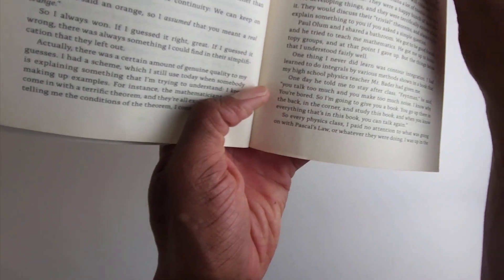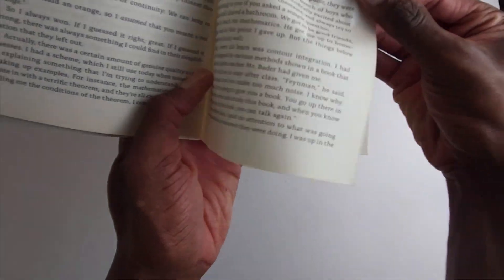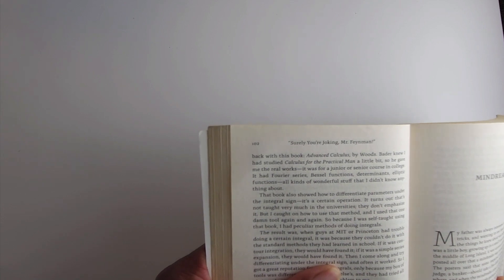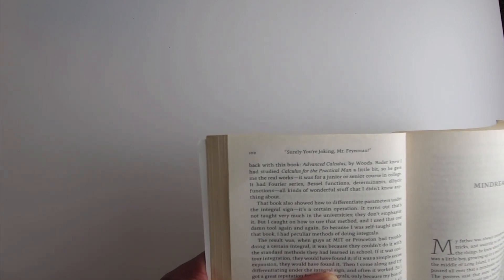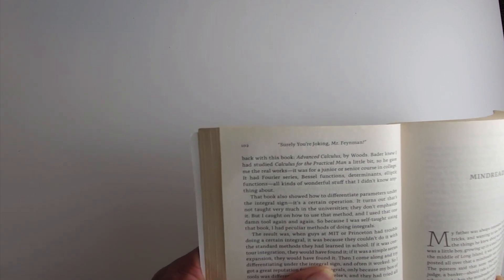So every physics class I paid no attention to what was going on with Pascal's Law or whatever they were doing. I was in the back with this book Advanced Calculus by Woods. Badger knew I had studied Calculus for the Practical Man a bit so he gave me the real works. It was for a junior or senior course in college.